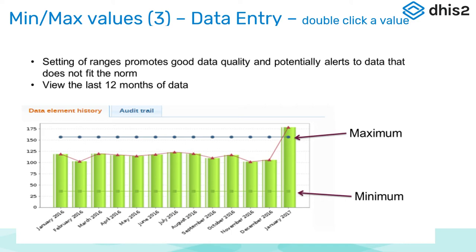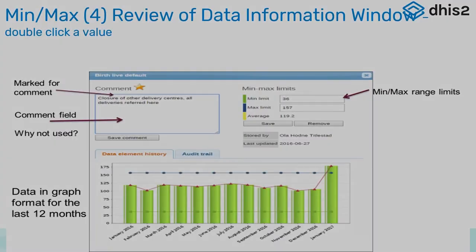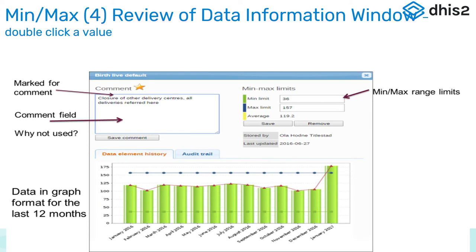If you double-click on a value, you get what is called the data information window. In the top left-hand corner is the comment field, and we see that this comment field is almost never used, perhaps mainly because it's not seen. Above the comment is a star, which if you click on it, will save it and allow you to run a follow-up analysis.